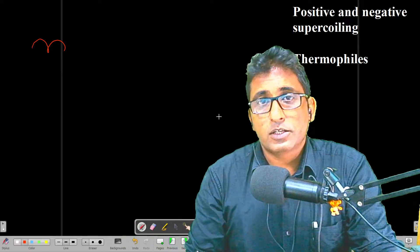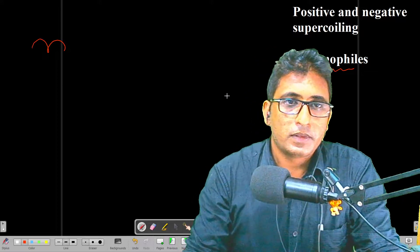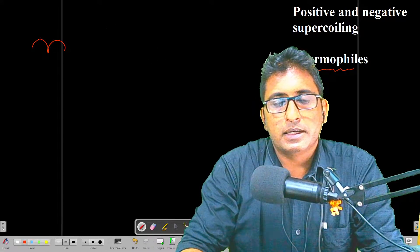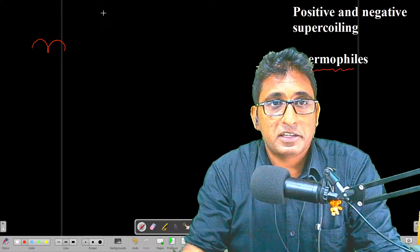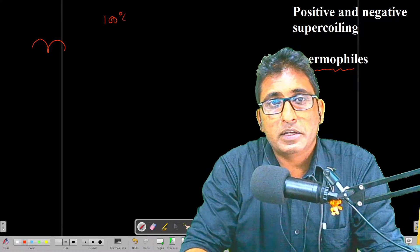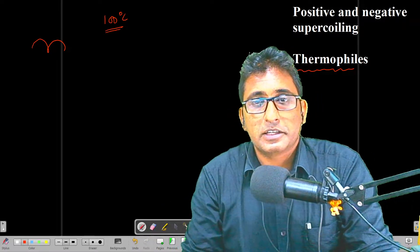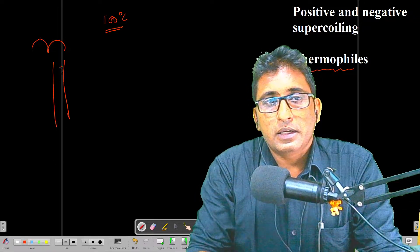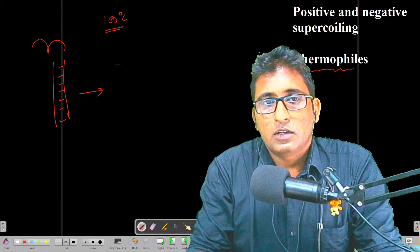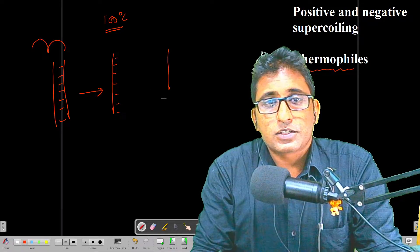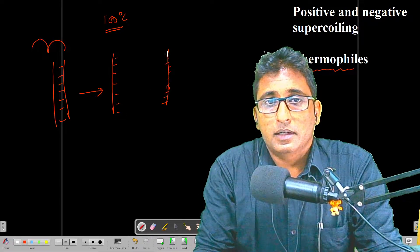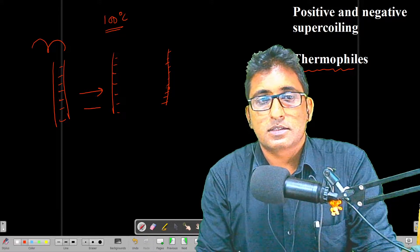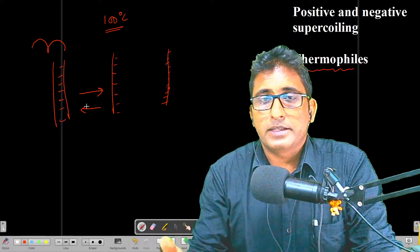Positive supercoiling is also useful, especially in the cases of thermophiles. Thermophiles live in ecosystems that are in hot water, hot springs which may reach above the boiling point or nearby boiling point, about 100 degrees centigrade. As we studied about the stability of the DNA, we know that DNA when heated will denature, and that is not good for the DNA to function as a genome.